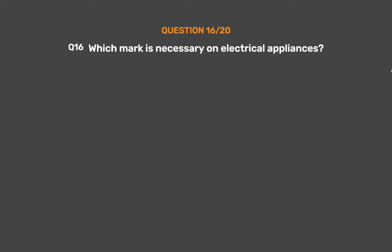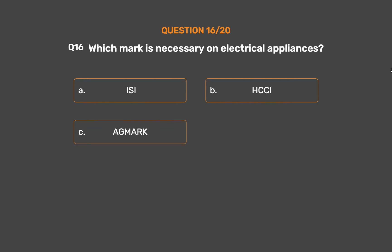Question number 16. Which mark is necessary on electrical appliances? Option A: ISI mark. Option B: HCCI. Option C: AG mark. Option D: KSK. The correct answer is Option A: ISI mark.